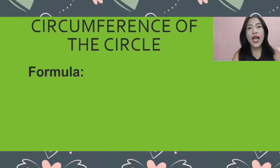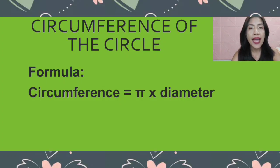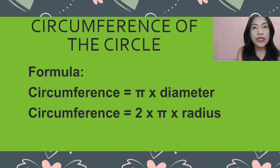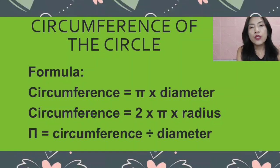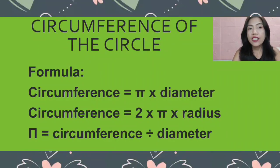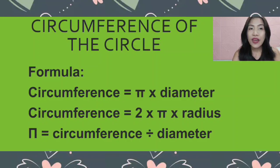The circumference of a circle has a formula depending on the given. We have circumference equals pi times diameter if the diameter is given. If the diameter is not given, we use circumference equals 2 times pi times radius. We also have another formula if circumference and diameter are given: pi equals circumference divided by diameter. Analyze the problem first to use the correct formula.